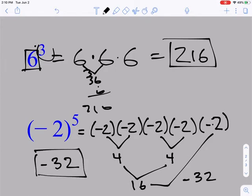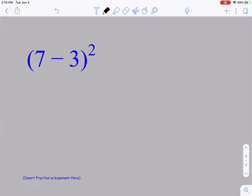So negative 32 for this one. Let's look at another one. If I have the problem 7 minus 3 and I'm raising that whole thing to the second power, that just means that I'm gonna do what's in there and then we're gonna raise that to the second power. So 7 minus 3 is 4, so I simplified what's inside the parentheses and I raise that to the second power, and 4 squared is 16.